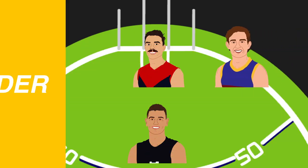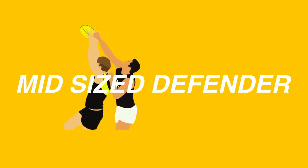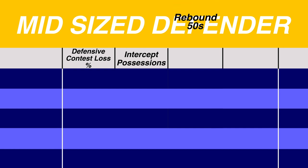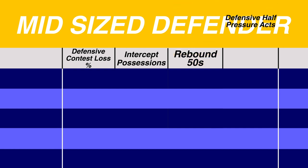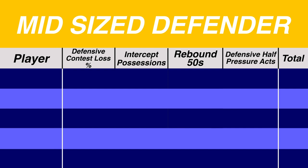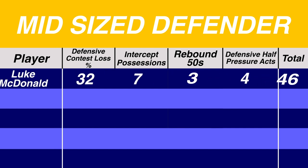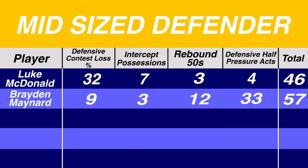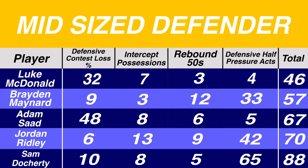The other back pocket spot would go to a mid-sized defender able to balance shutting down an opponent and providing intercepts and rebounds, across all of lowest defensive loss percentage, intercept possessions, rebound 50s, and defensive half pressure acts. The lowest score was North Melbourne's Luke McDonald — his low one-on-one numbers were balanced by good performances everywhere else, helped by the fact that no player scored well in all four categories. Braden Maynard was let down by his pressure acts but managed to claim 2nd ahead of Adam Saad.